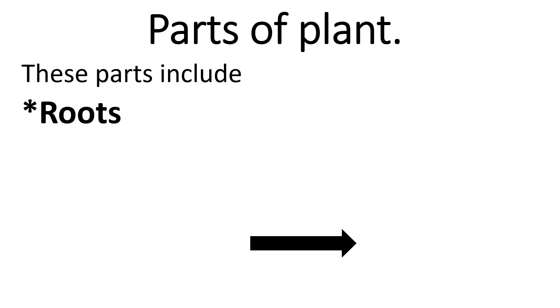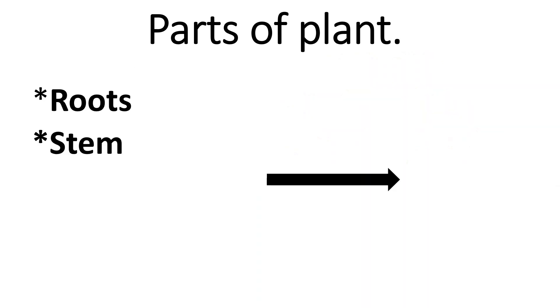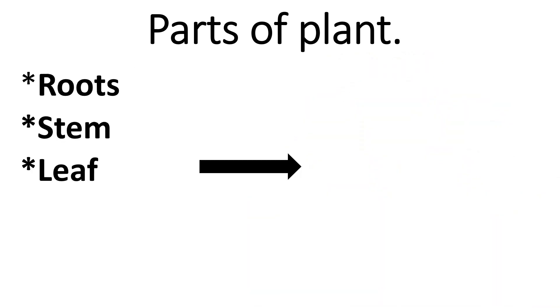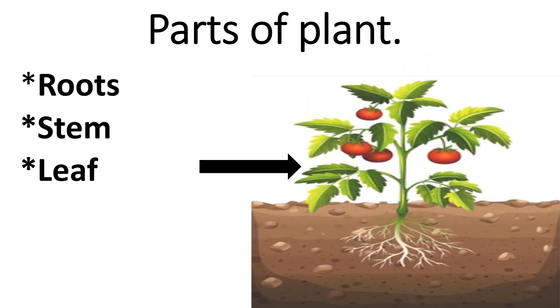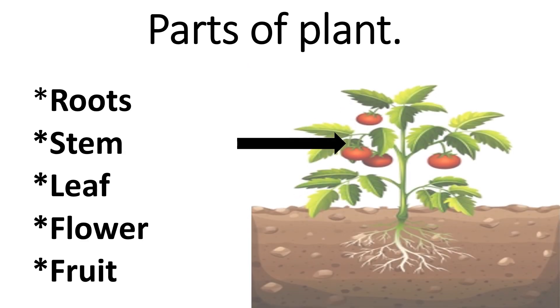These parts include roots, stem, leaf, flower, and fruit.